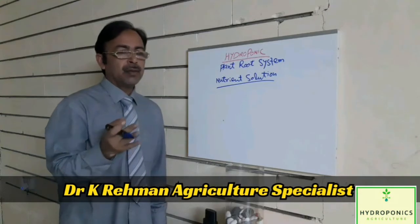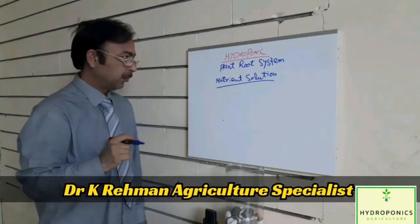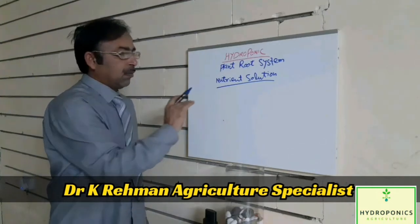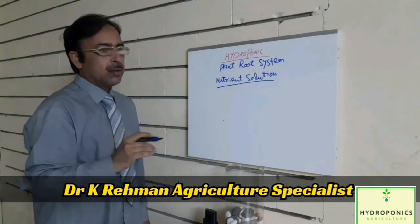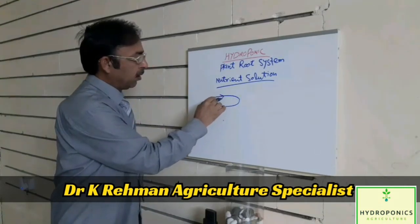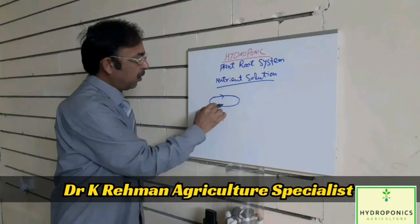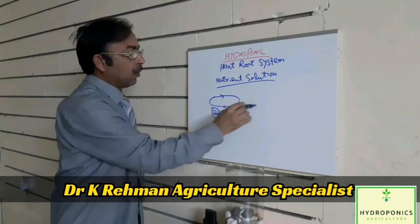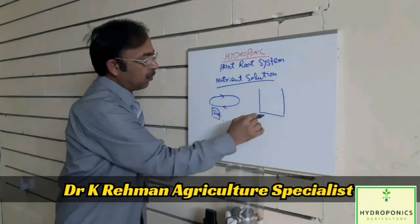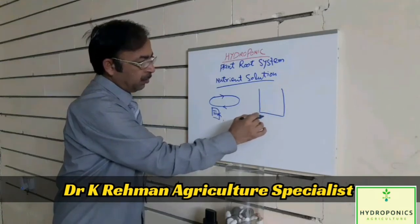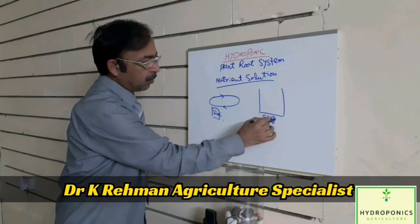As we know, the purpose of roots is only three functions: to support the plant, to take up water, and to absorb the nutrients from the nutrient solution. In hydroponics, we call these nutrient solutions, which are in the form of liquid or in water.